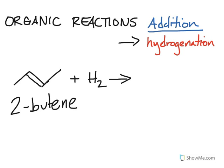And as we add hydrogen to the double bond, we actually convert this unsaturated hydrocarbon to make it saturated, and we would have butane.